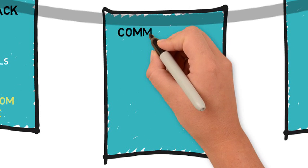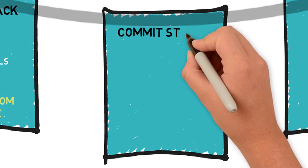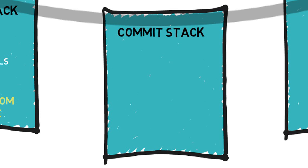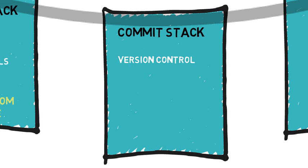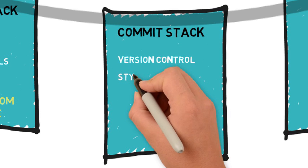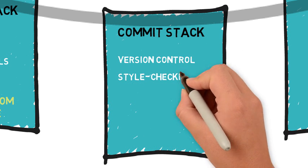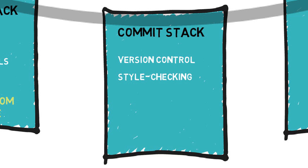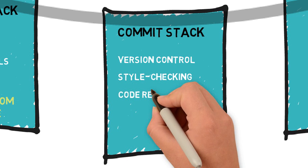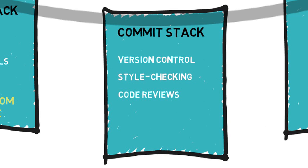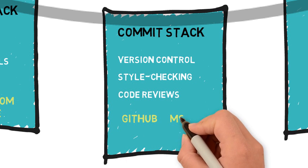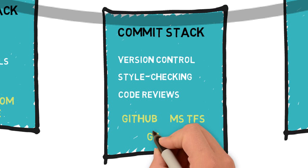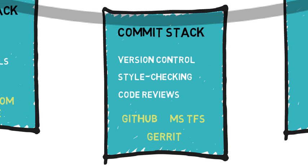The commit stack supports version control and many best practices, including daily check-ins, committing assets early and often, automated style checking, and code reviews. Typical tools include Git, GitHub, Microsoft TFS, and Garrett.